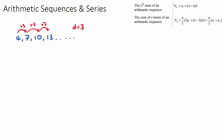Another example of an arithmetic sequence is one that goes down. For example, 20, 16, 12, 8, and so on. This is also an arithmetic sequence because there is a common difference, but this time it's negative 4. If it were negative 4 and then negative 3, this would not be an arithmetic sequence — it needs to be a common difference.